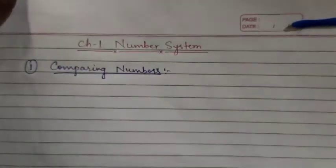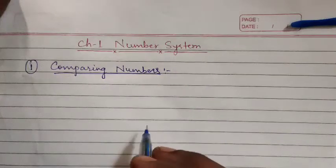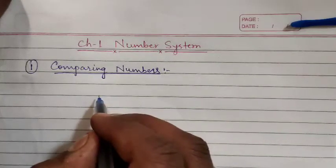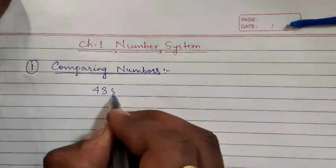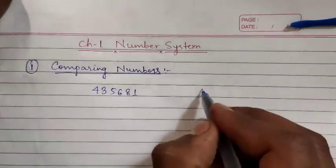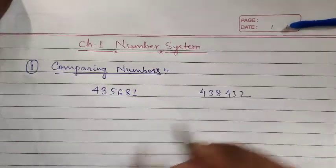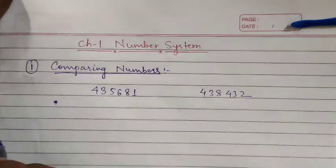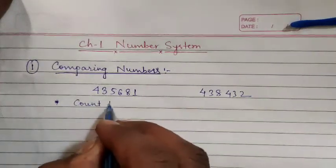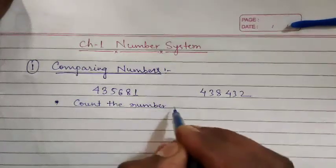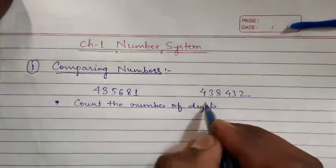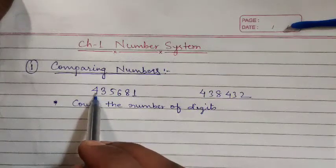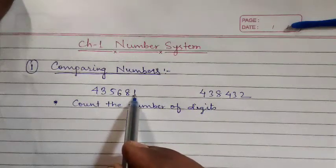Comparing numbers means to check which number is small and which number is big. Let us take an example and understand how to compare two numbers. Suppose I have taken the number 435681 and another number 438432. Now we have to compare these two numbers. The first step is to count the number of digits. Counting: 1, 2, 3, 4, 5, 6 — six digits are there.